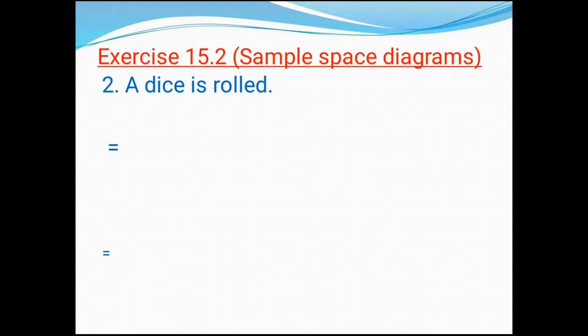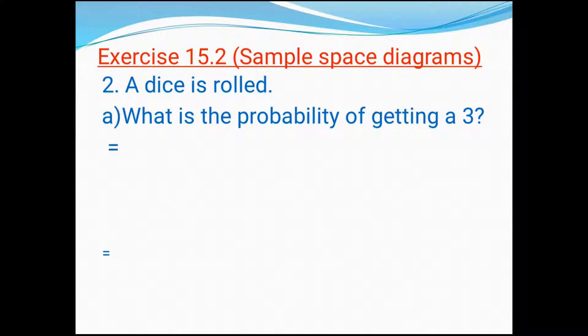Next question: a dice is rolled. A dice has six numbers. They're asking, what is the probability of getting a three? Remember, how many threes do we have in a dice? One. And total possible outcomes is six. So we can tell one by six is our answer.